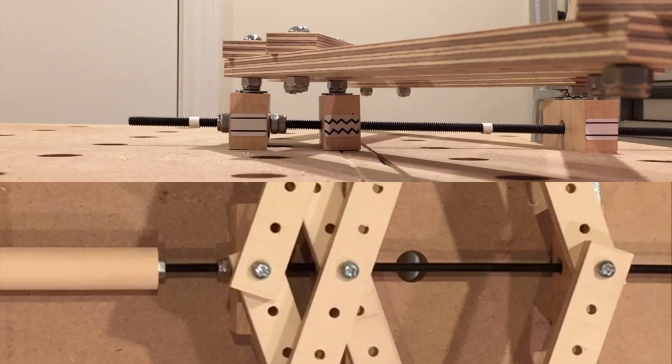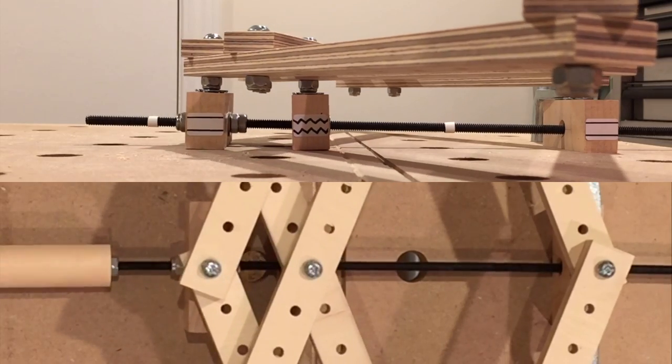Spinning the rod advances it through the threaded insert in the middle, and that pushes out the block in front. That enlarges the small section, and geometry of the pantograph takes care of the rest.